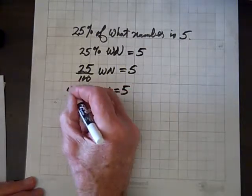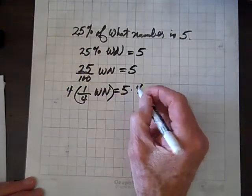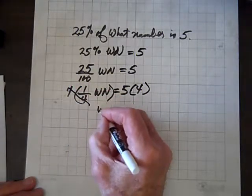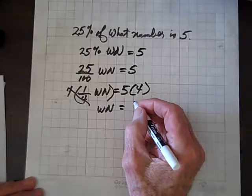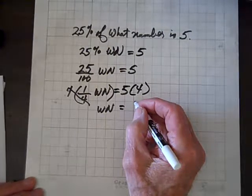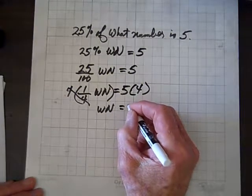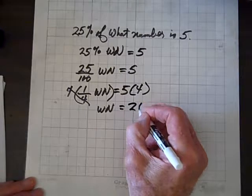So now let's multiply both sides by 4 times 4. And the 4s divide out, and we get what number? And 4, 5 times 4 is 20. Excuse me, yes, 20.